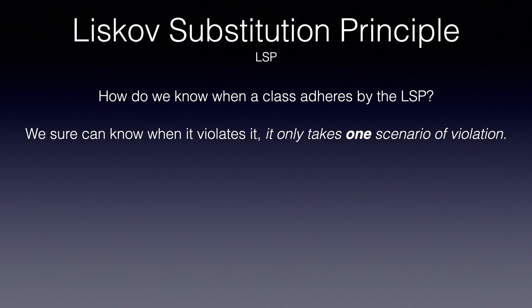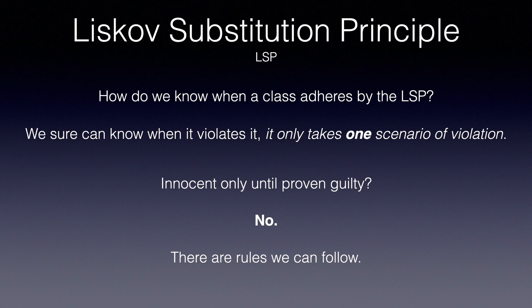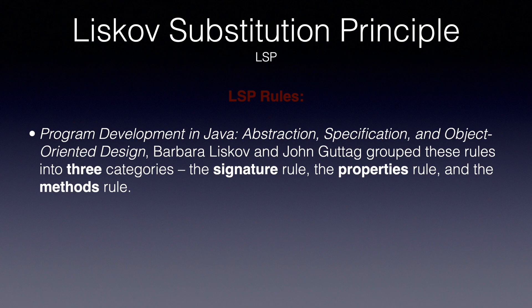But are we innocent until proof of guilt? Luckily, no. We can indeed follow some steps to properly subclass a class, like a framework, thus understanding that our class follows the LSP. In their book, Program Development in Java: Abstraction, Specification, and Object-Oriented Design, Barbara Liskov and John Gadag group these rules into three categories: the Signature rule, the Properties rule, and the Methods rule.